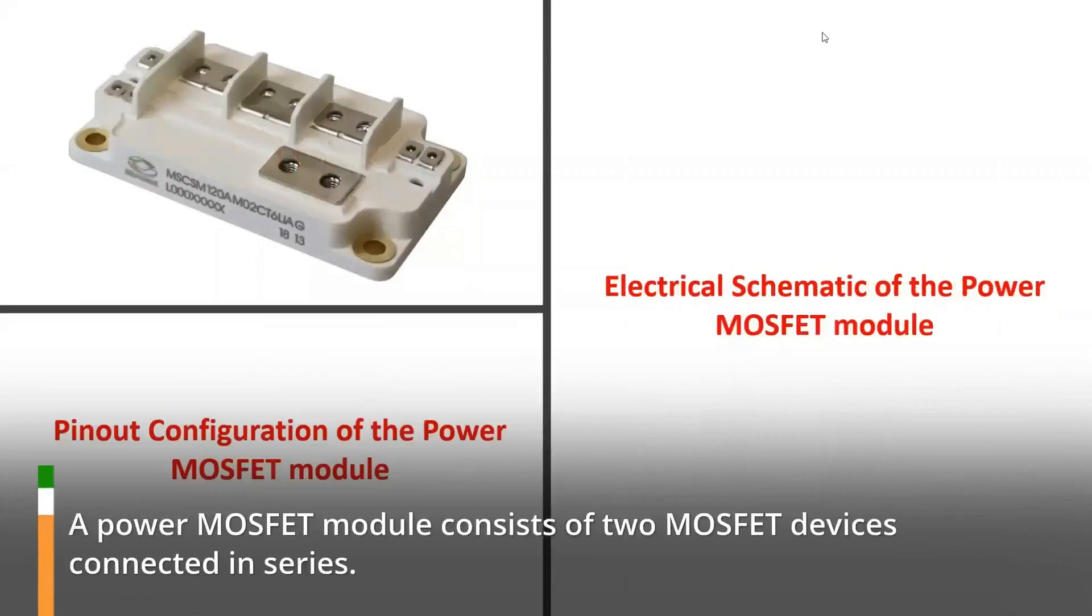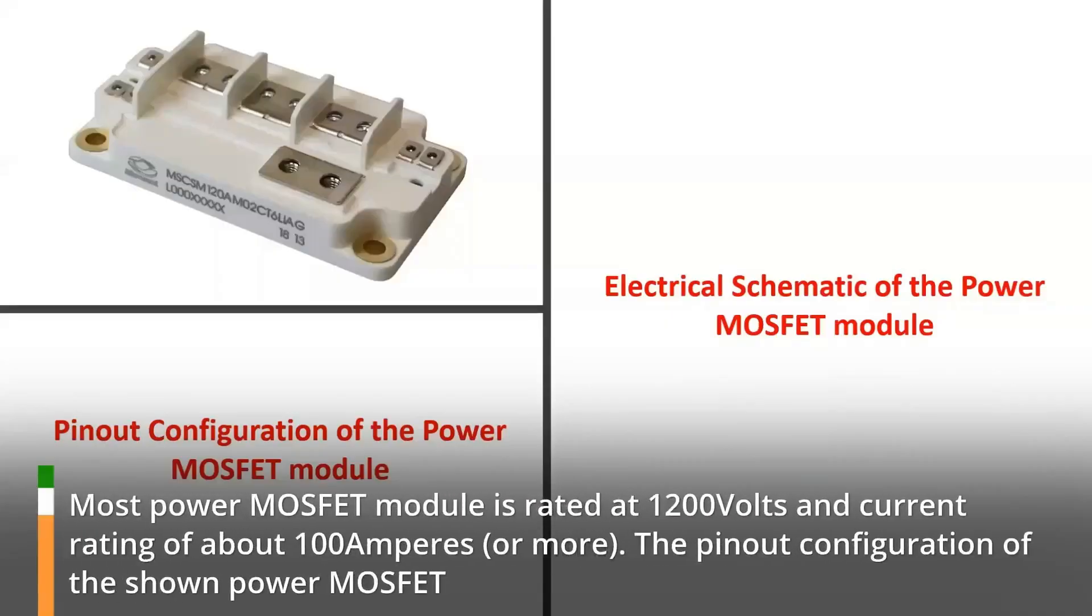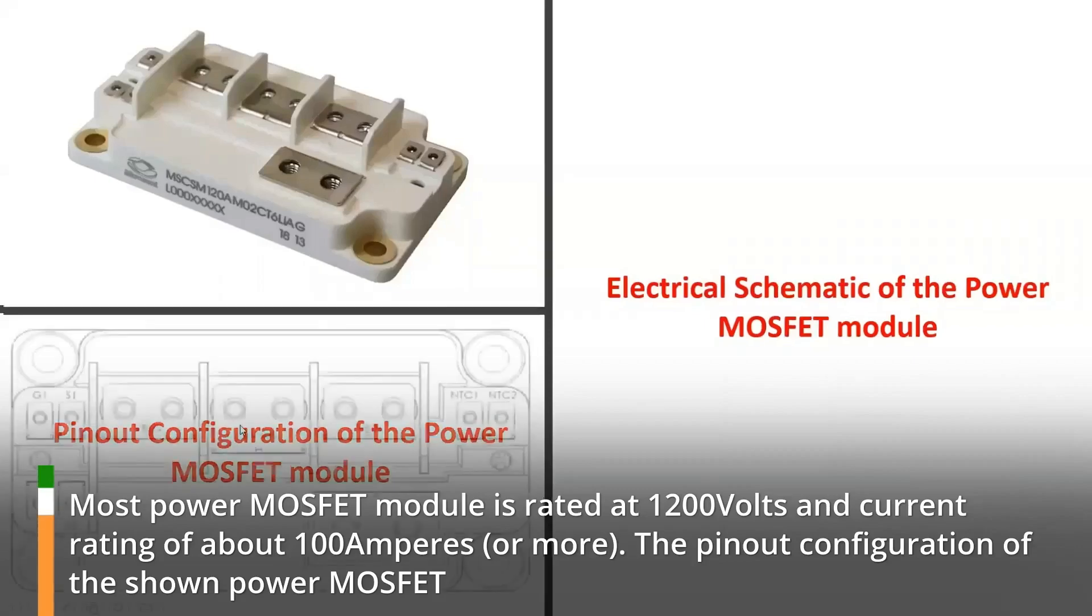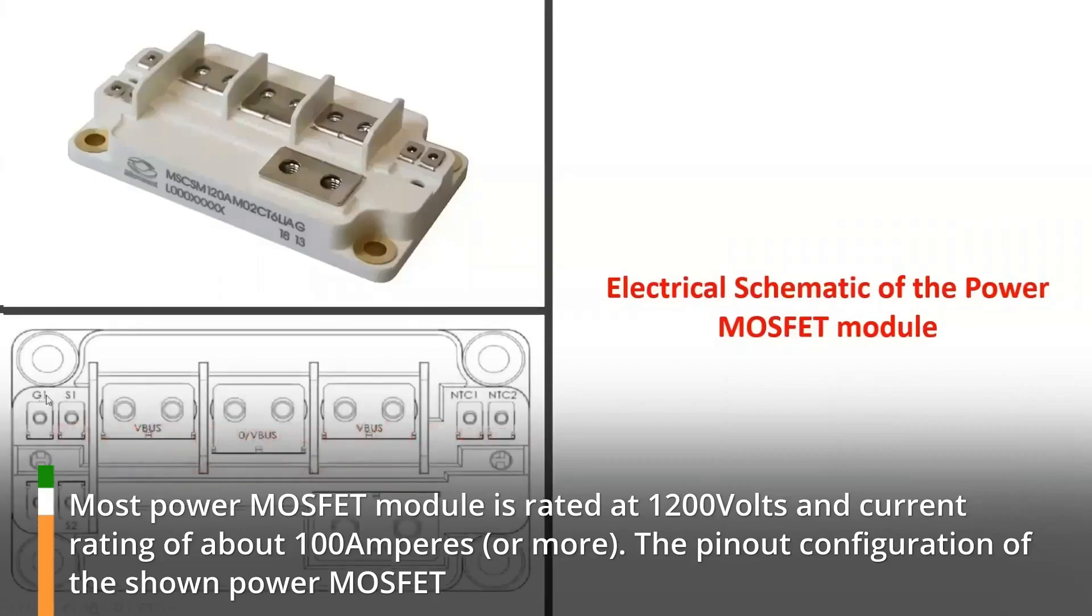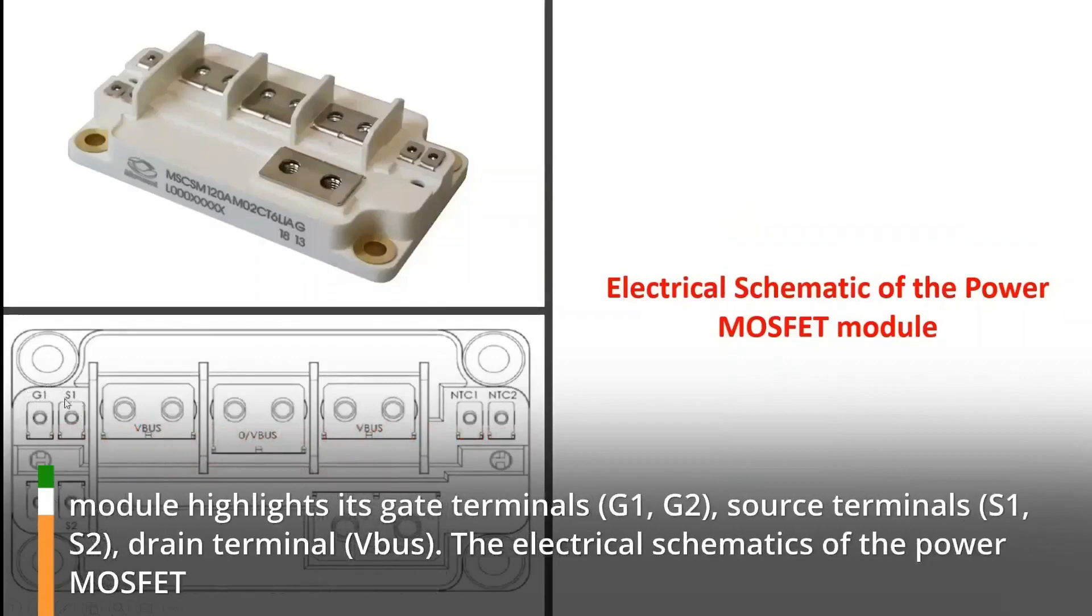A power MOSFET module consists of two MOSFET devices connected in series. Most power MOSFET module is rated at 1200 volts and current rating of about 100 amperes or more. The pinout configuration of the shown power MOSFET module highlights its gate terminals G1, G2, source terminals S1, S2, drain terminal bus.